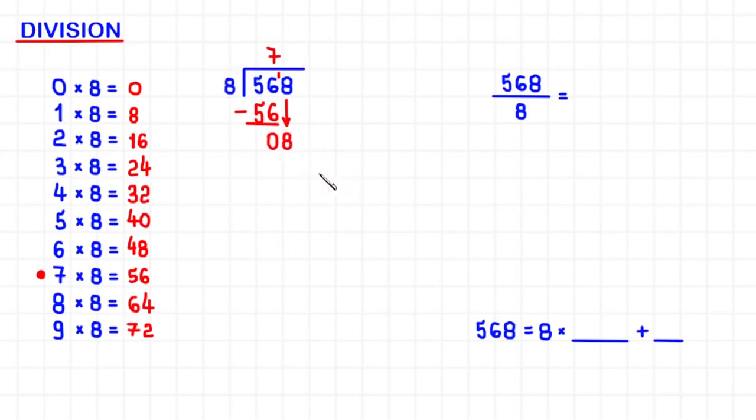By looking at the multiplication table, you will see that 1 times 8 is 8, so I put 1 here. 1 times 8 is 8, I write it here, and then I subtract. 8 minus 8 equals 0.